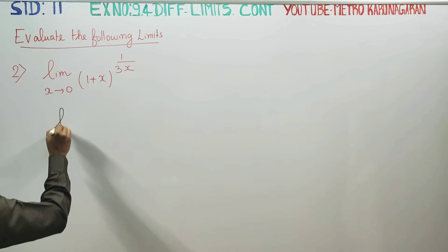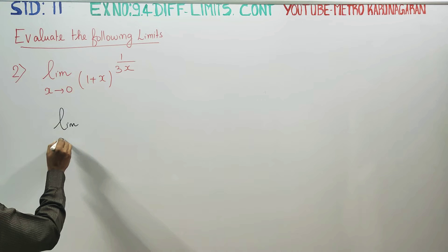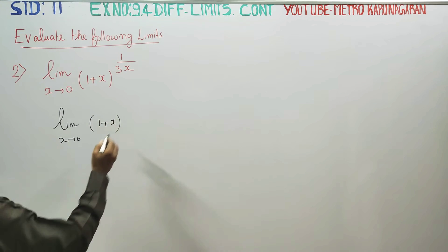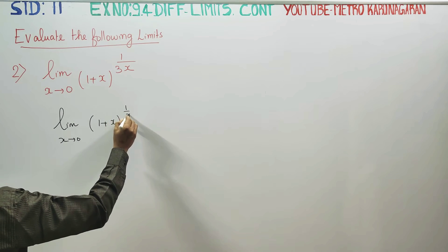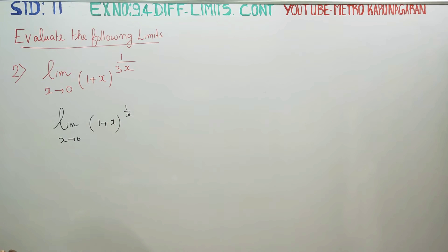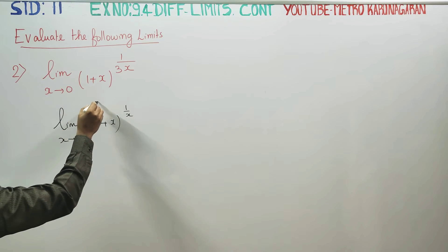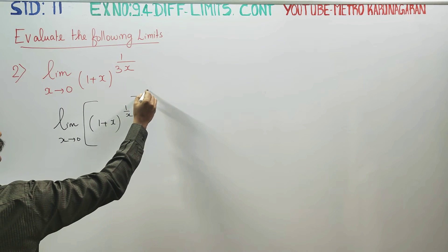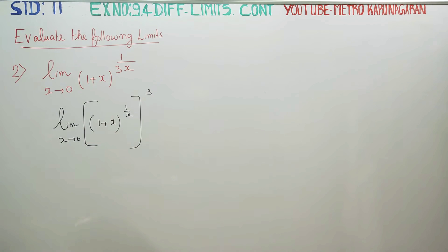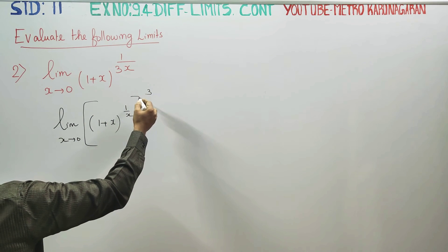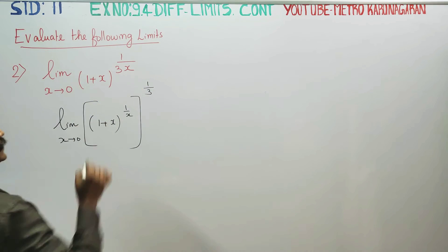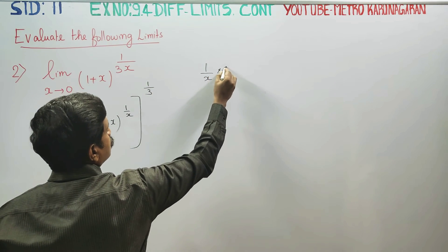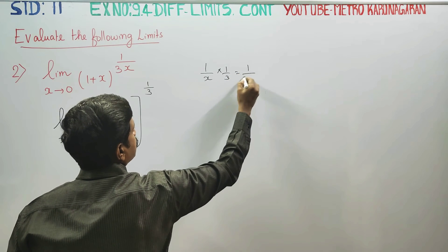This can be written as limit x turns to 0, 1 plus x all power 1 by x, all power 1 by 3. All power 3, sorry, all power 3. How to multiply 3 by x, 1 by 3 is 1 by 3. 1 by x into 1 by x into 1 by 3 is 1 by 3x.